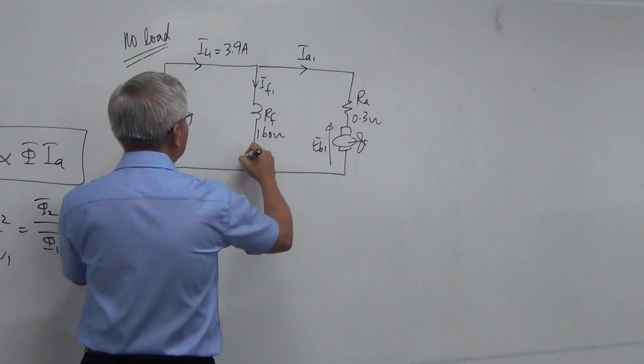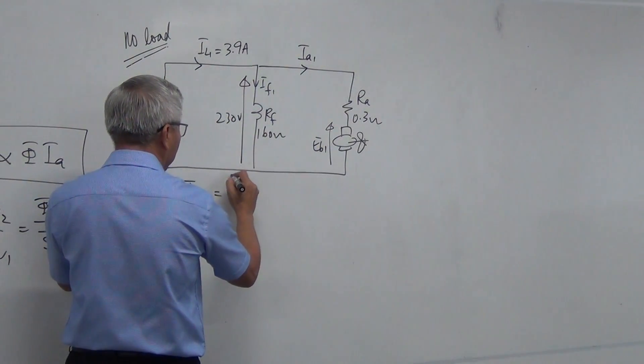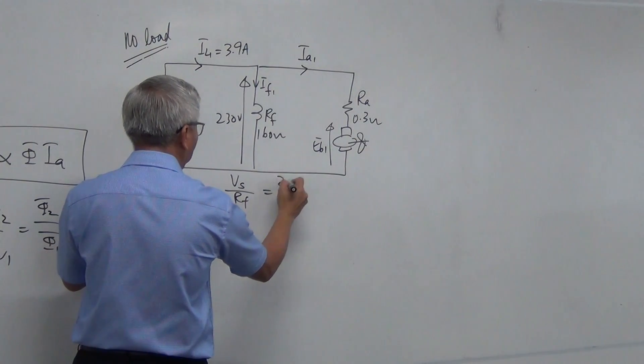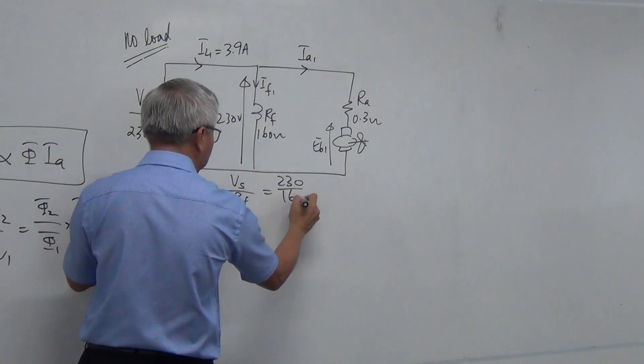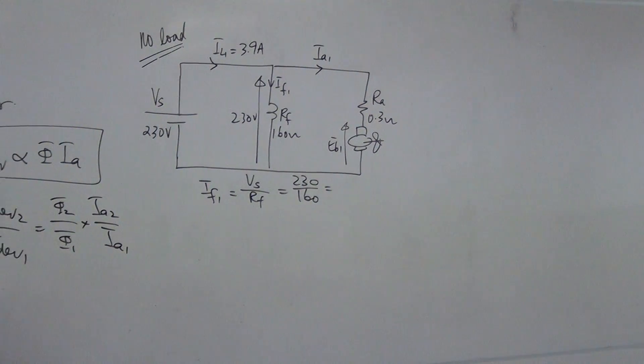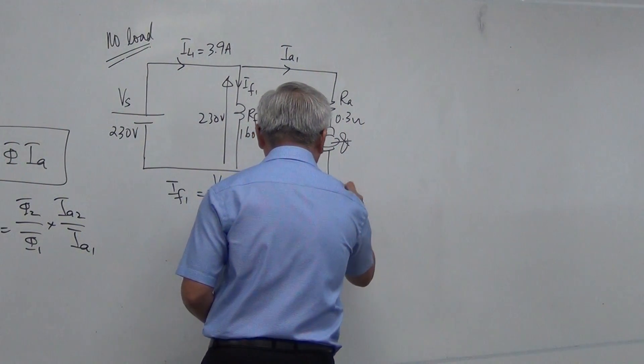IF1, what is the voltage across here? This is 230 volt. This is a parallel circuit. So IF1 is equal to VF, Vs over RF, that is equal to 230 divided by 160. That gives me the numerical answer of 1.4375 ampere.